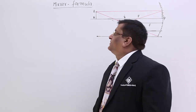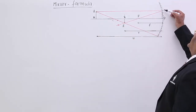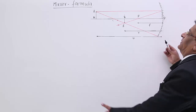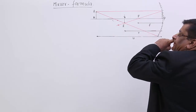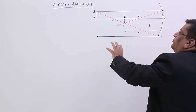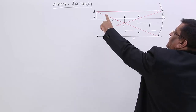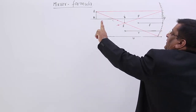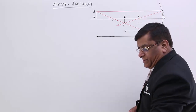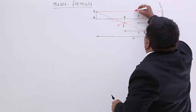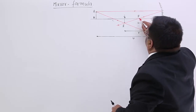We have placed one object before a mirror. This is a concave mirror. This is an object AB which is placed before it. According to the rules we have made an image. From point A we have taken two rays. One goes parallel to the principal axis and after reflection it passes through focus.